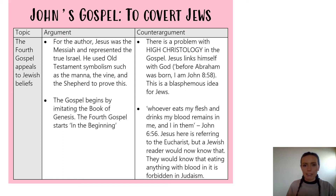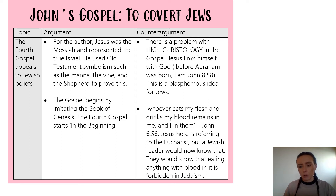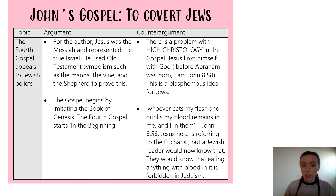The second topic is whether John's Gospel is trying to appeal to Jews. The first argument in support of this is that John's Gospel uses Old Testament symbolism throughout, potentially to appeal to a Jewish audience. There are references to the bread, the vine, and the shepherd — all terminology a Jewish audience would understand. Some would even say, making a synoptic link to topic 2.1 on John's prologue, that the logos is a term a Jewish audience would be familiar with. The Gospel also begins by imitating the book of Genesis, opening with 'in the beginning,' suggesting John may be trying to convert Jews through this use of familiar literature.